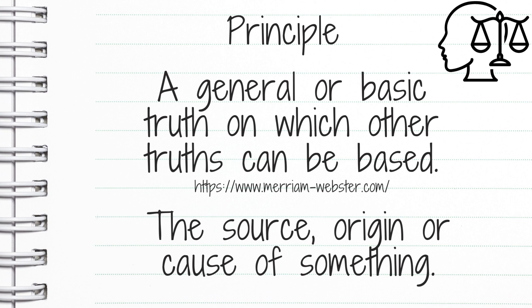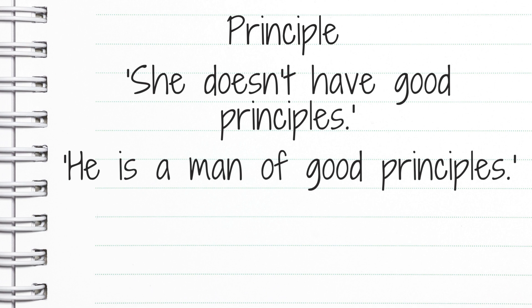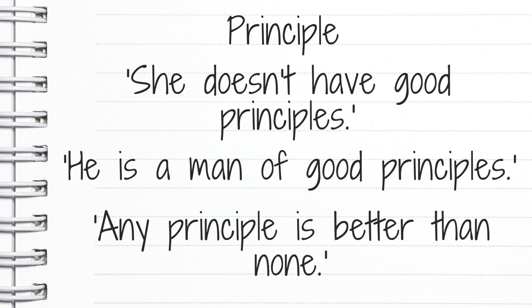If you can't remember both, just remember one. I like to remember the one ending in 'pal' — I'll get into that once we move over to that one. So: 'She doesn't have good principles' — we're saying this person doesn't have good morals or values. 'He's a man of good principles' — he does have good morals or values, that's part of his internal makeup. 'Any principle is better than none' — it's better to have rules, guidelines, morals, and values rather than not having any at all.